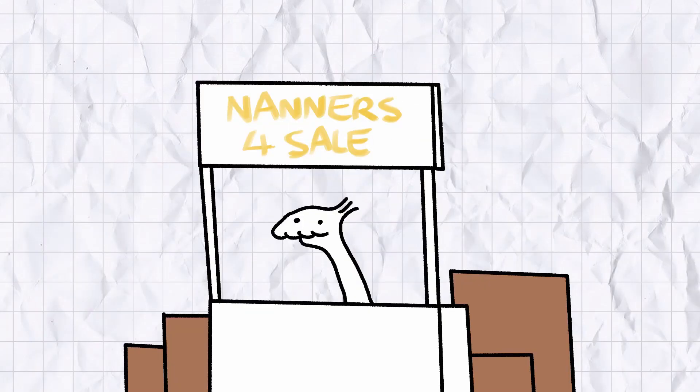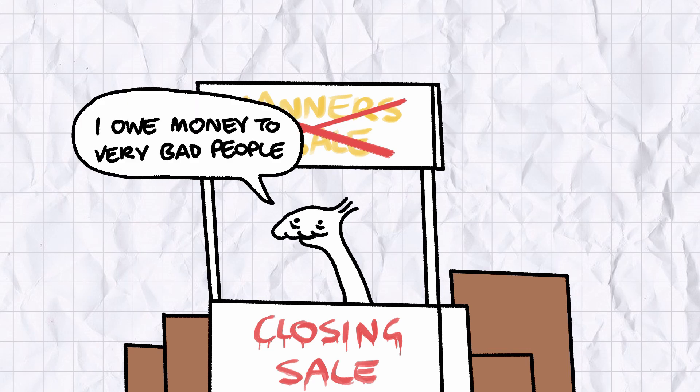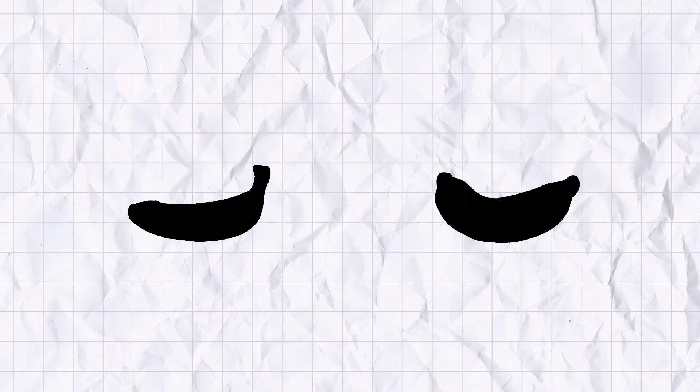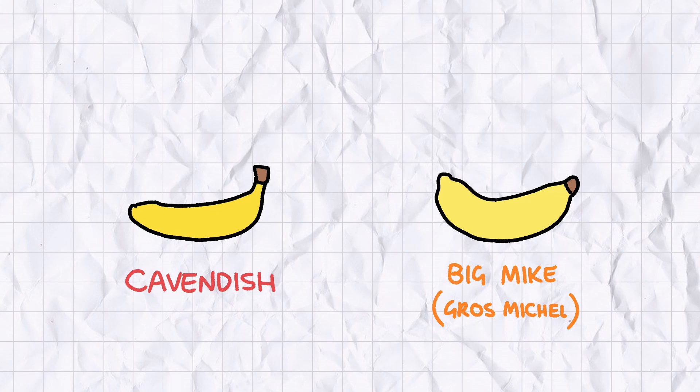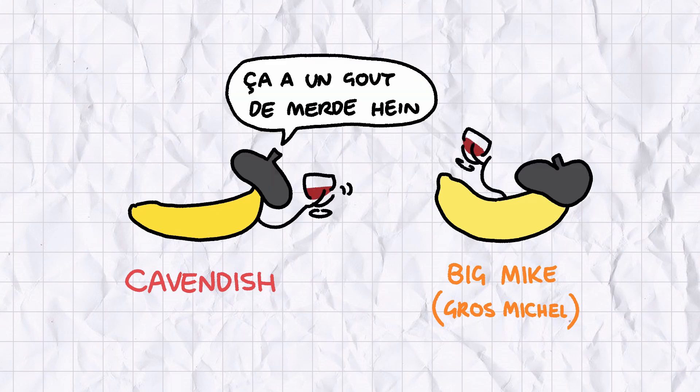If anything, we should be grateful we can still buy bananas at all, because they were almost rendered completely unviable for commercial farming. The dominant cultivar of the banana today is the Cavendish, but back in the early 20th century, the top banana was the Big Mike, or Gros Michel, for the wine-quaffing, cheese-eating francophones among you.